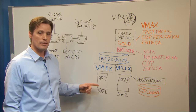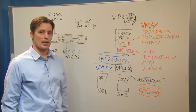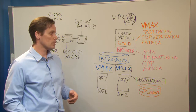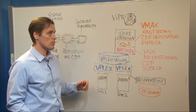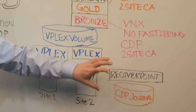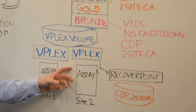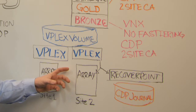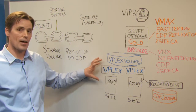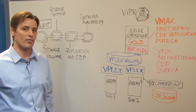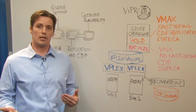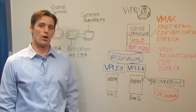Next, Viper goes into the array and specifies any of the array-level settings, such as snaps and clones or tiering — in this case, there weren't any specified. The next step is Viper tells RecoverPoint to create a continuous data protection replication of the application data. This entire process takes approximately five steps and is done in just a matter of minutes, and more importantly, it reduces a lot of the risk that human error can introduce into the process of provisioning.